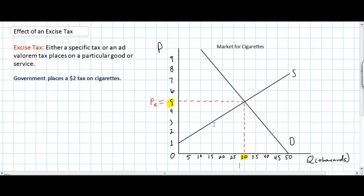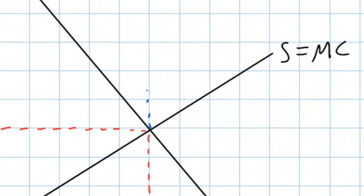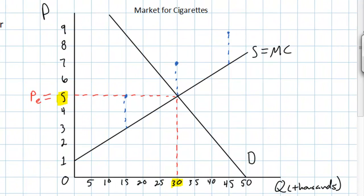Now what will happen when there is a $2 tax on each pack of cigarettes sold? Remember that the supply curve represents the marginal cost curve. Therefore, any tax on cigarettes will essentially increase the marginal cost of providing cigarettes, since the tax must ultimately be paid by cigarette producers. We can view the effect of a $2 tax as an upward shift of the marginal cost curve by $2. This means cigarette producers now face an additional cost of $2 for every pack they sell. The impact will be seen as a decrease in the supply of cigarettes, with the supply curve shifting upwards by $2.